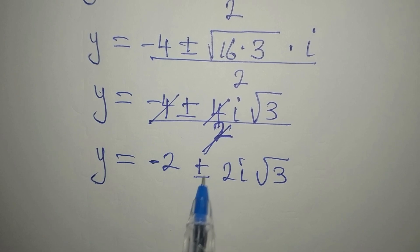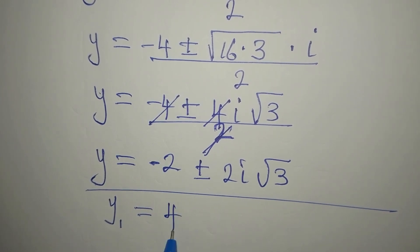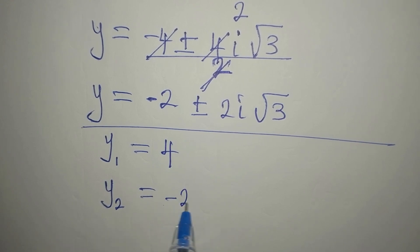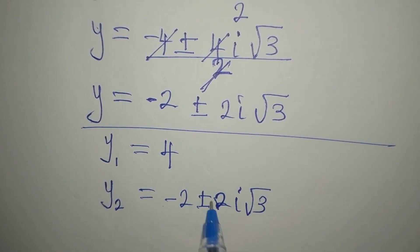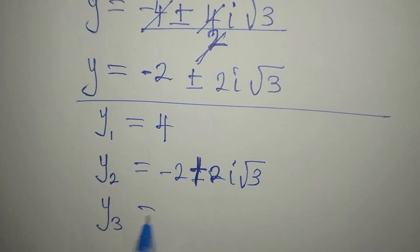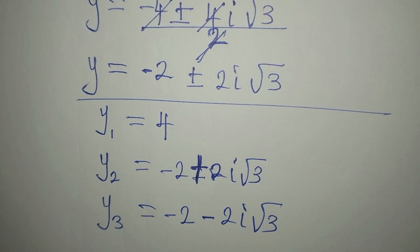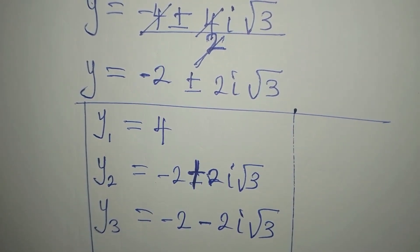So the three solutions are: y₁ equals 4, y₂ equals minus 2 plus 2i root 3 (taking the positive), and y₃ equals minus 2 minus 2i root 3 (taking the negative). This is completely solved. Thank you — if you have not subscribed to my channel, subscribe so you can get more of my videos. Thank you for watching.